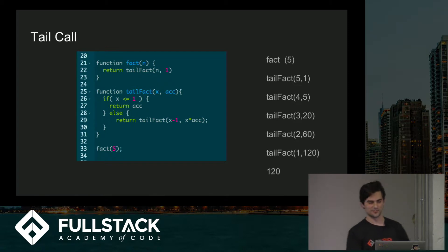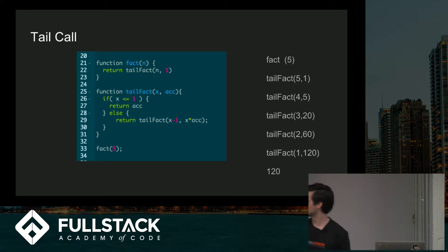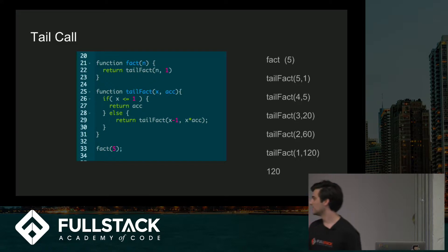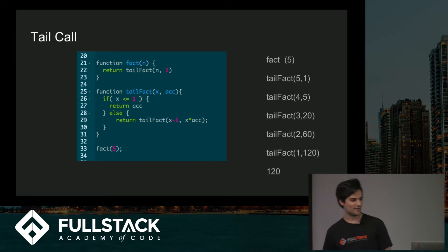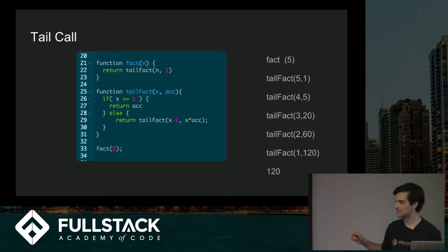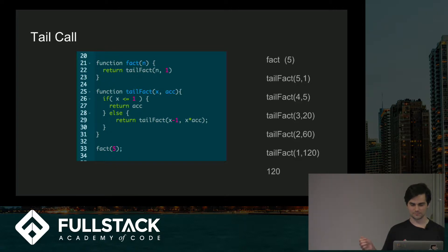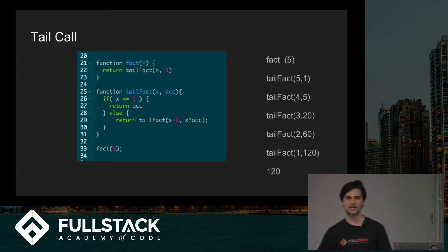Here is another example of a similar process. It looks recursive and there's a helper function involved, but there's a key difference. The difference is on line 29, which is known as a tail call in functional programming. This does the same thing as factorial, except it uses the helper function to initiate the process and also keep track of an accumulator value.